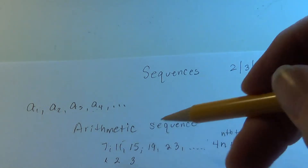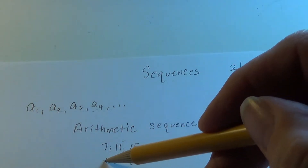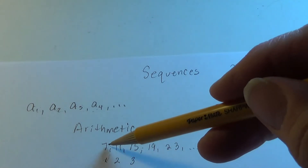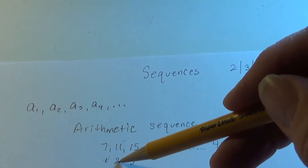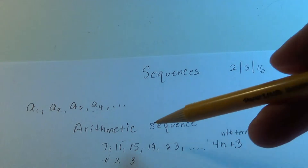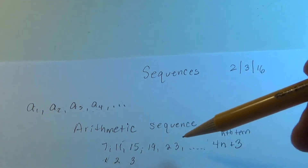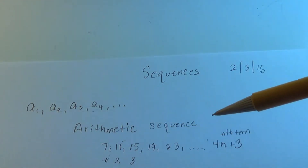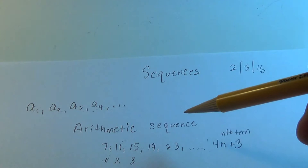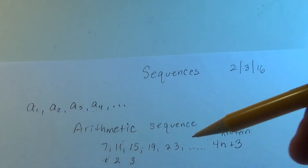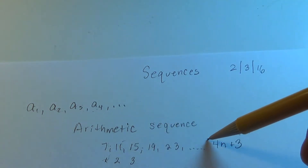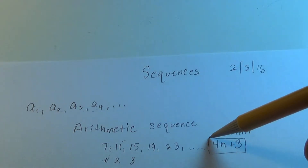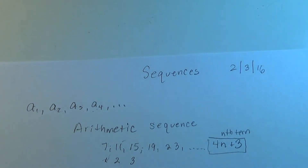If you put in a 1, you generate a 7. When you put in a 2, you generate an 11. When it's an arithmetic sequence, I can show you a method to always get this answer without much ado.